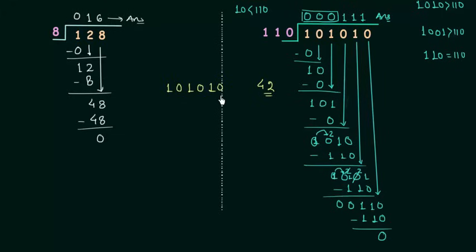So here, weight of this position is 1 then we have 2, 4, 8, 16 and 32. We have 32, we don't have 16, we have 8, we don't have 4.